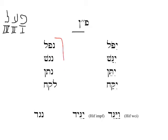Here are several examples of pe-nun verbs: nafal, to fall; nagash, to come near or to draw near; natan, to give. And then a little bit unusual, lakach — we count lakach as a pe-nun because the lamed acts as though it were a nun.